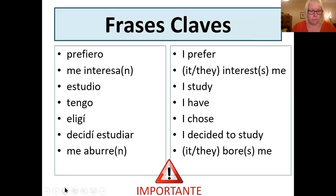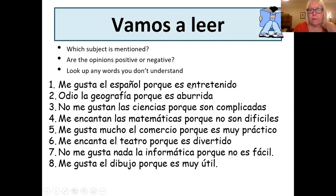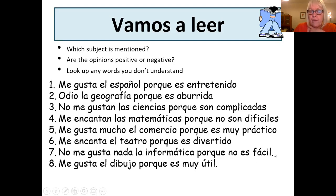The key was the adjective. Entertaining — positive. Aburrida — boring — so negative. Complicadas — complicated — negative. But look at the negative in front as well: it's not difficult. So I love maths because it isn't difficult — that's a positive opinion. Práctico — positive opinion; it's a practical subject which is why they like it. Me encanta el teatro porque es divertido — divertido is probably the most overused adjective in the language; it means fun. And then I don't like something — although fácil is a positive adjective, the opinion is negative because it isn't easy. And the last one there is useful — so positive.